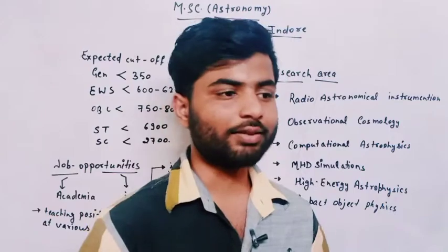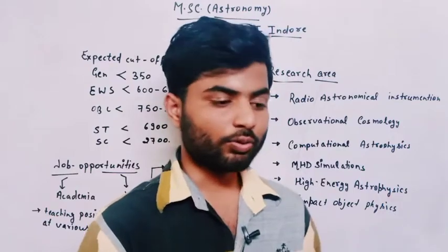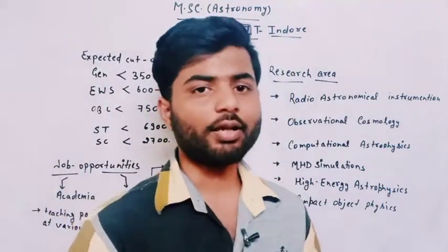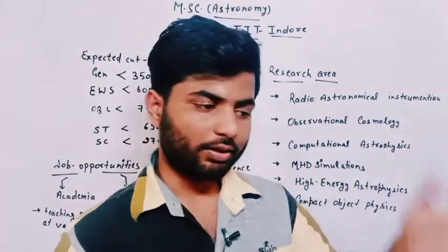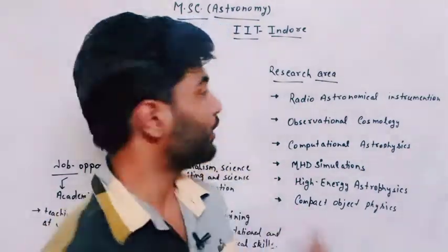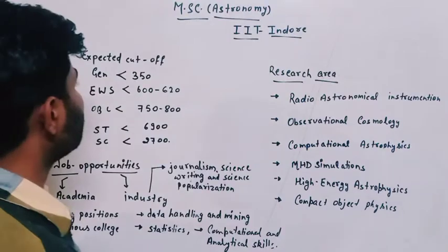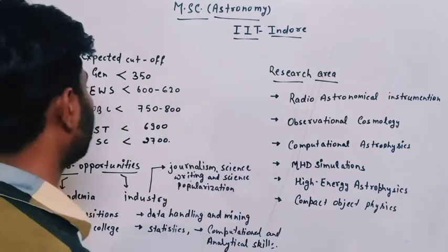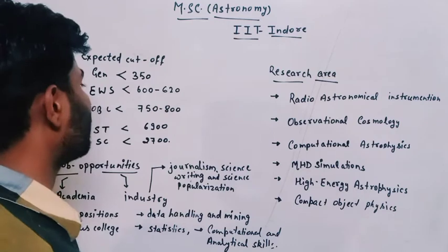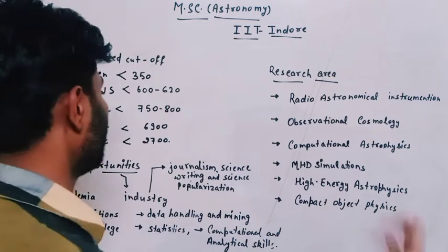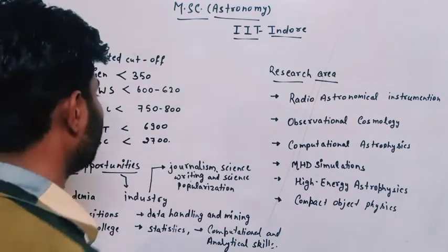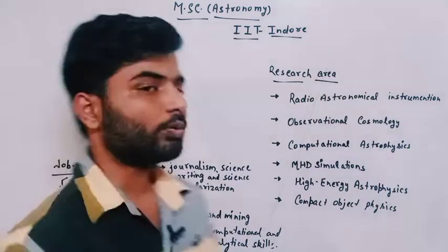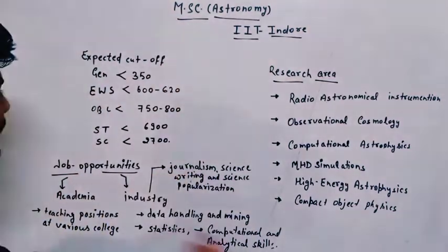Now, the expected cutoff ranks — these are the last ranks which may be allotted in the third or final round. For General students it will be up to 350, for EWS up to 600 to 620, for OBC 750 to 800, for SC maybe up to 2700, and for ST maybe around 6900.